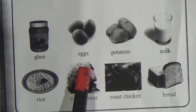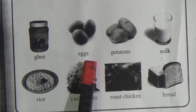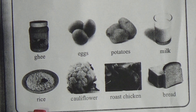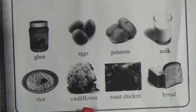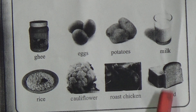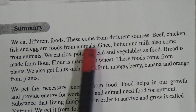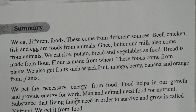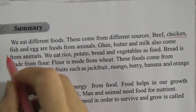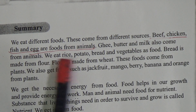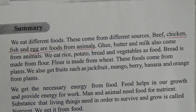Ghee and eggs we get from animals. Potatoes we get from plants. Milk comes from animals. Rice we get from plants. Cauliflower also comes from plants. Roast chicken we get from animals. Now go to the next page. Beef, chicken, fish, and eggs are foods from animals. Ghee, butter, and milk also come from animals. Underline this line — these lines are important for tests and fill in the blanks.